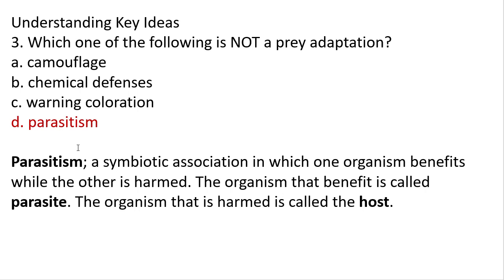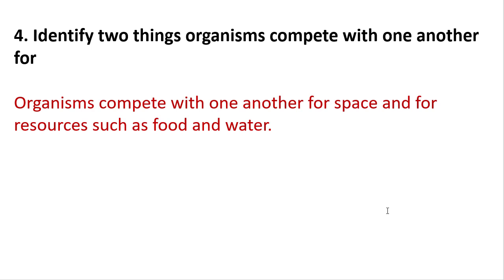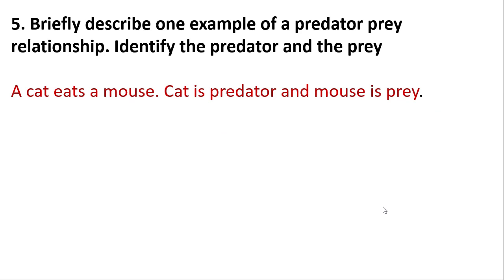Review question 3: which of the following is NOT a prey adaptation? The three prey adaptations are camouflage, chemical defenses, and warning coloration. Parasitism is not a prey adaptation — it is a type of symbiotic relationship. Question 4: organisms compete with one another for space and resources such as food, water, or a mate. Question 5: example of a predator-prey relationship — a cat eats a mouse; the cat is the predator and the mouse is the prey.